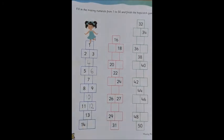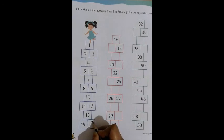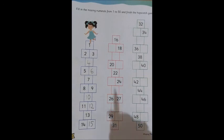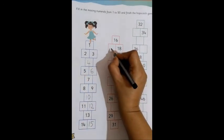We have a 13, 14 is already there, then we write 15. 1, 5, 15. Moving on to the next. 16 is there, we write 17. 1, 7, 17.